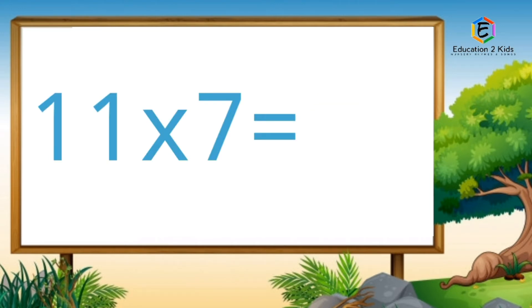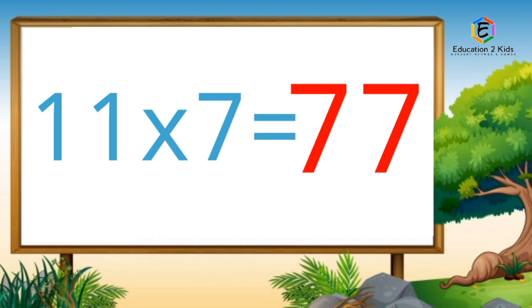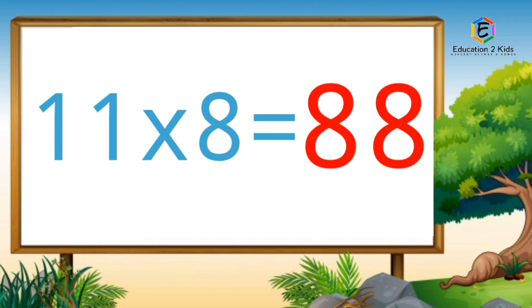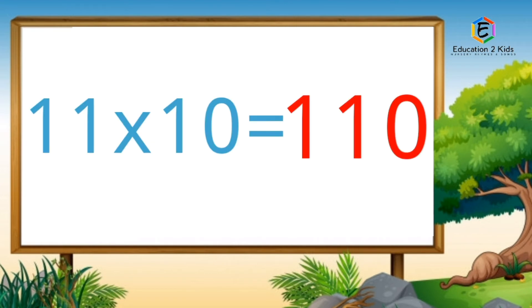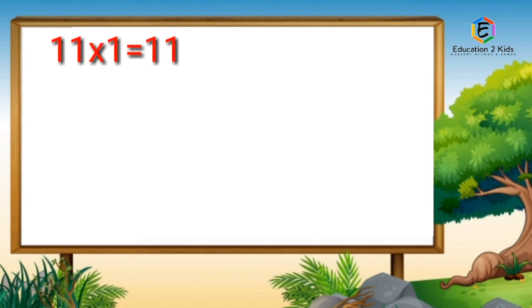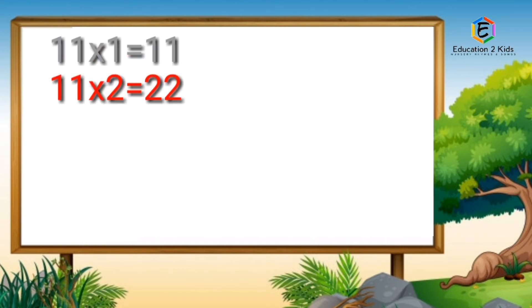Eleven sevens are seventy-seven. Eleven eights are eighty-eight. Eleven nines are ninety-nine. Eleven tens are hundred-ten. Eleven ones are eleven. Eleven twos are twenty-two.